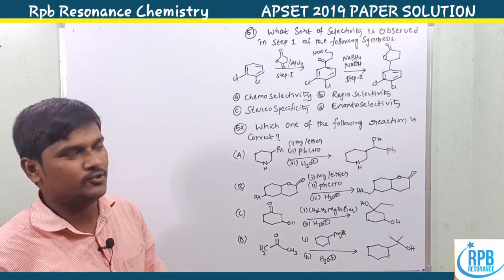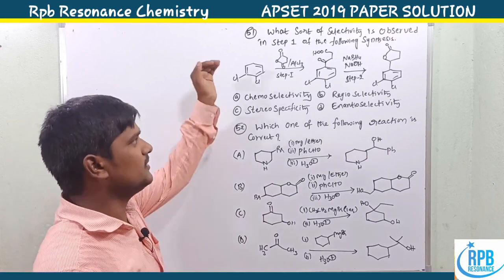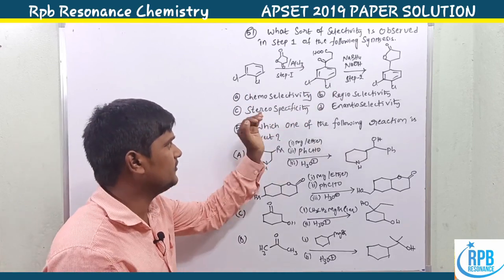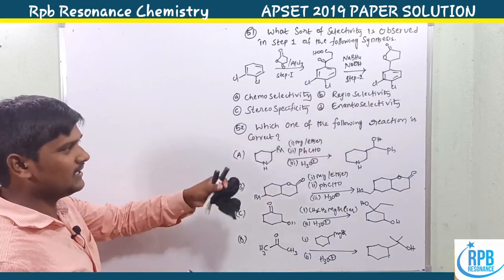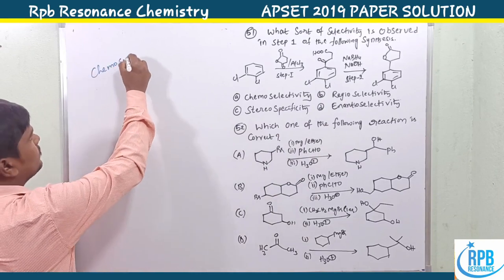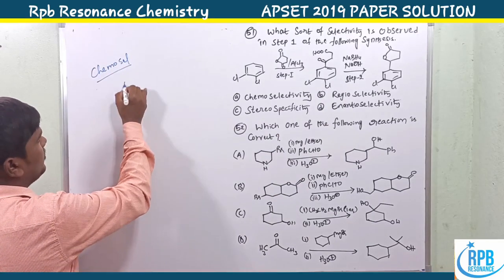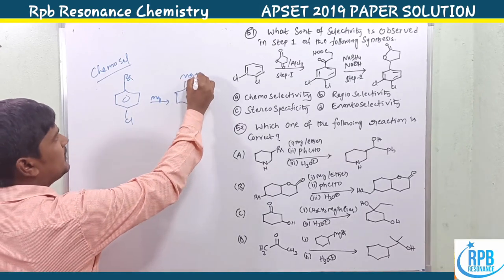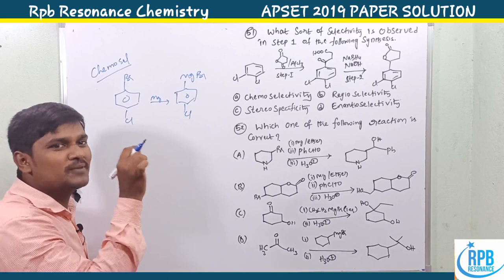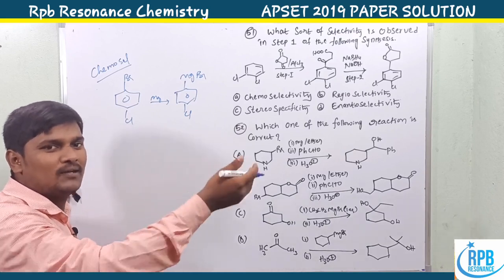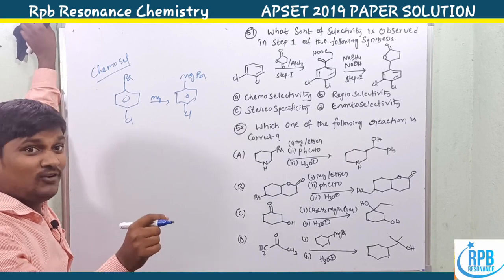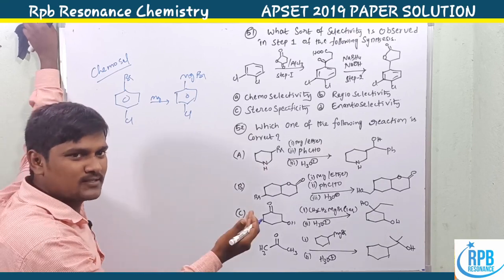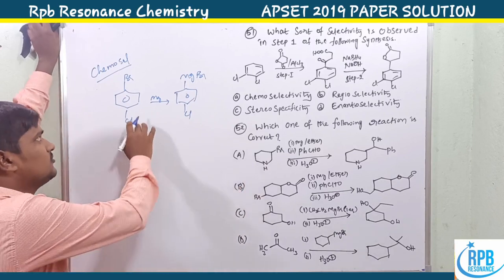Question 51: what sort of selectivity is observed in step one of the following synthesis? They ask whether it is chemoselectivity, regioselectivity, stereoselectivity, or enantioselectivity. First, chemoselectivity: if a compound has two functional groups — for example chlorine and bromine — and the reagent selectively reacts with one functional group over the other, that is called chemoselectivity.